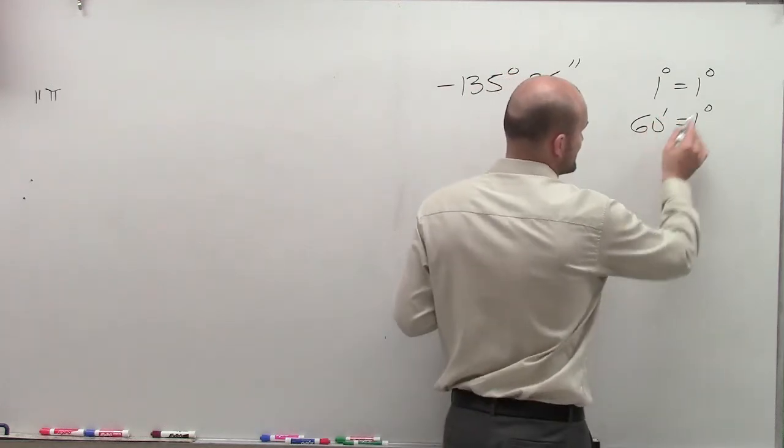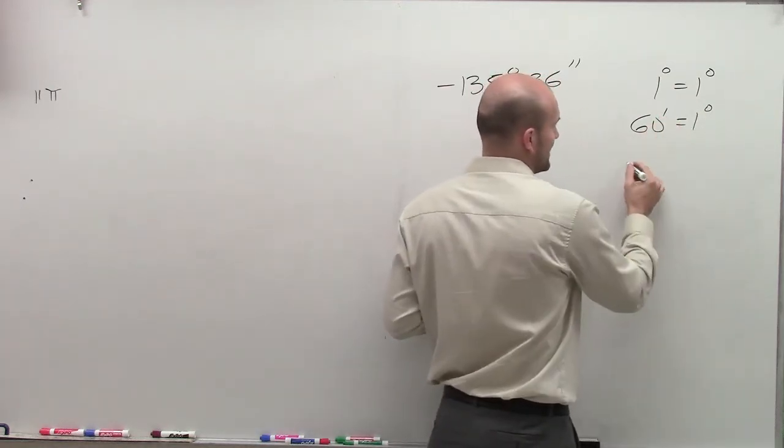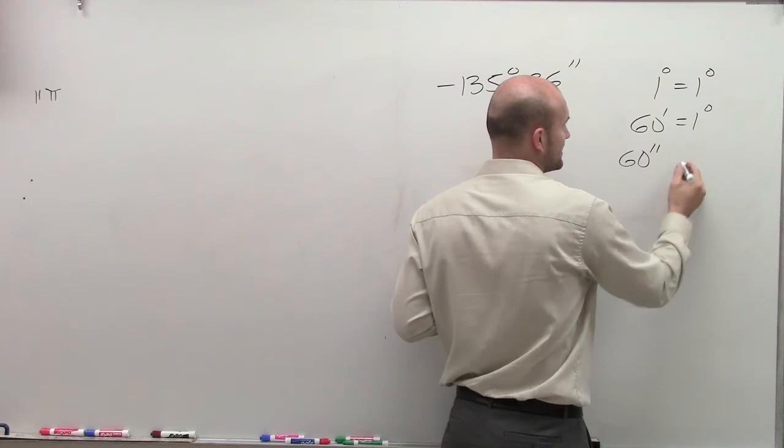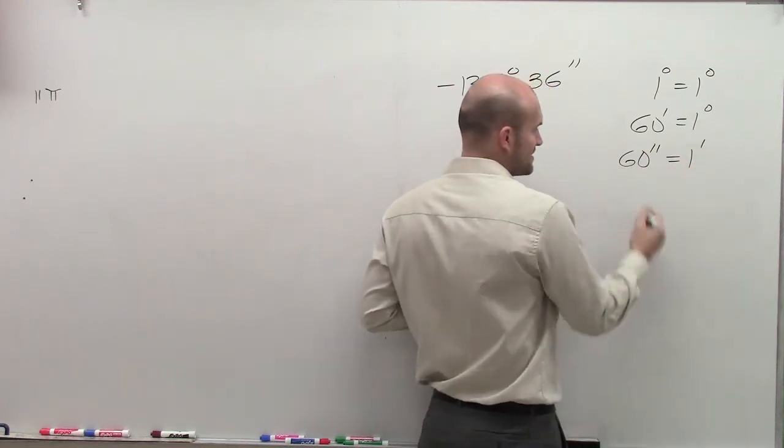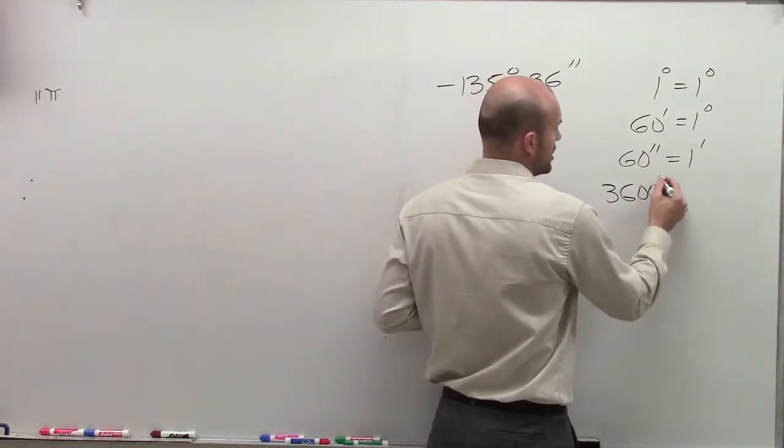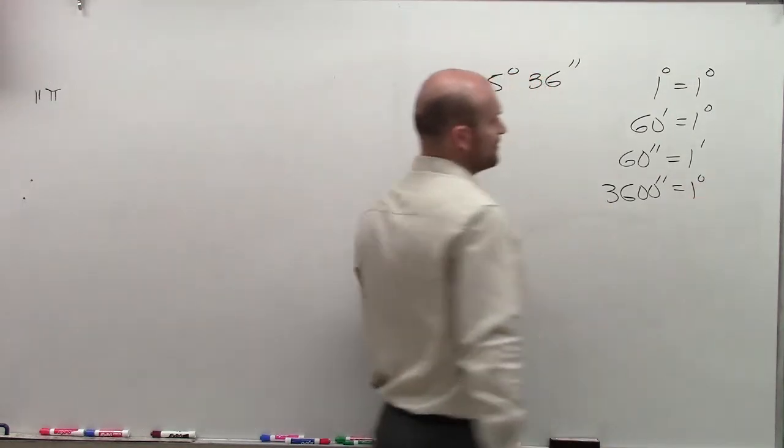Where if it takes 60 minutes to make up one degree and it takes 60 seconds to make up one minute, therefore it's going to take 3600 seconds to make up one degree.